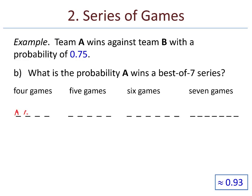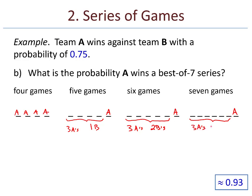In all situations, A has to win the final game. For the four-game series: A wins all four. For five games: A wins the final game, and among the first four blanks there are three A's and one B. For six games: five blanks preceding the final A, filled with three A's and two B's. For seven games: after six games the series was tied — three A's and three B's — then A wins game seven.